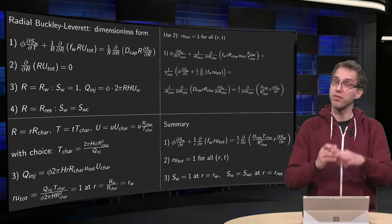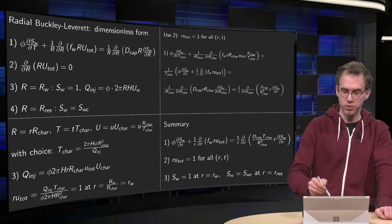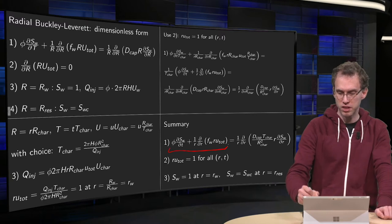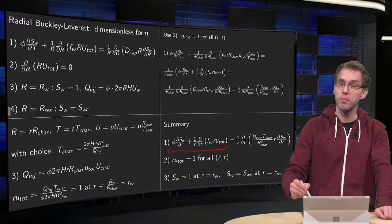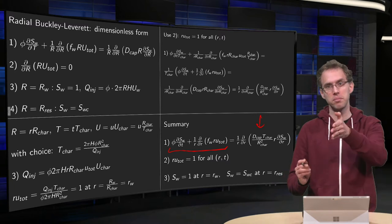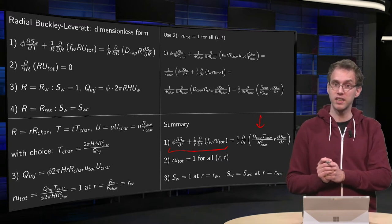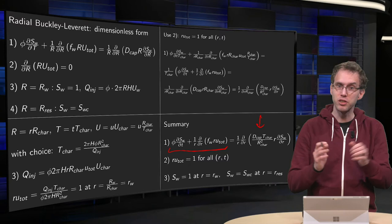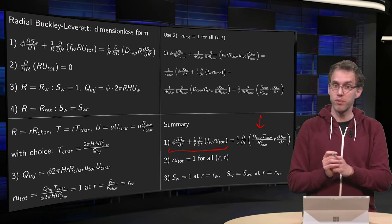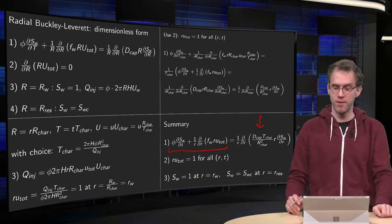So, if we compare, if we multiply by T-characteristics, what do we get? This is nice and dimensionless. And all dimensions have moved to this one constant, D-cap times T-characteristics over R-characteristics squared, which is some dimensionless combination now.